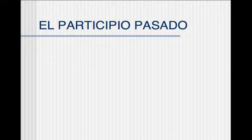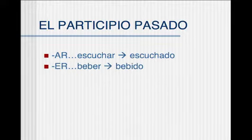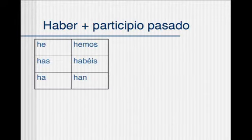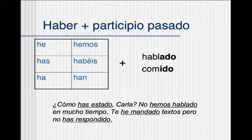El participio pasado is the second part of how to form this tense. What we do is take AR verbs like escuchar, and simply take off the AR and add ADO to the end. With ER and IR verbs, we add IDO to the end. So ADO and IDO — it's kind of like saying listened, drank, lived — in the sense of one has done it, it has been done. It's different from the pretérito, although sometimes you use both when you talk about the past.